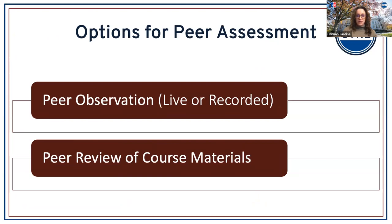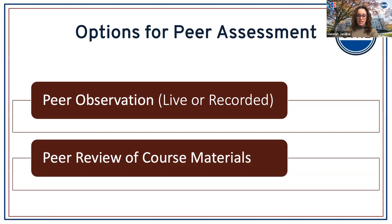For peer assessment, options include a peer observation of a live or recorded course, where a peer provides written feedback. There's a detailed guide on the CTRL website about how to go about peer assessment. Another option is peer review of course materials — similar to the annotated syllabus but handed to a peer who writes comments on your syllabus, assignment, or lesson plan, noting what they appreciate and what they might suggest changing.